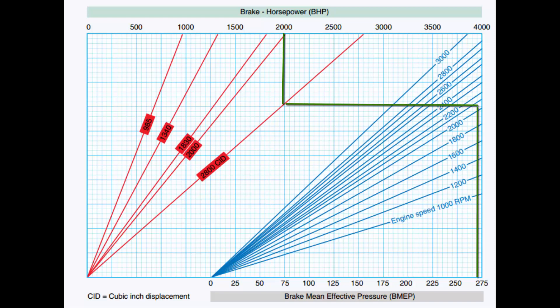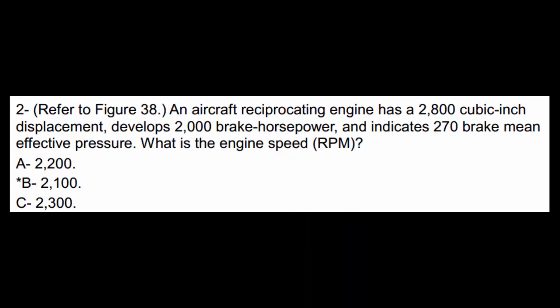And this 2800 cubic displacement engine will need to turn at 2100 RPM to develop 2000 brake horsepower with a BMEP of 270 PSI. So the answer to this question is 2100 RPM.